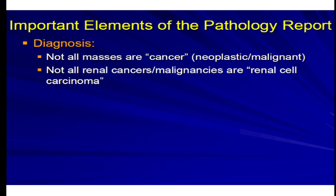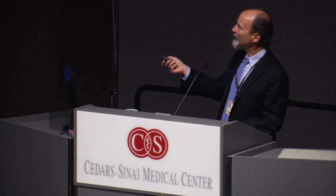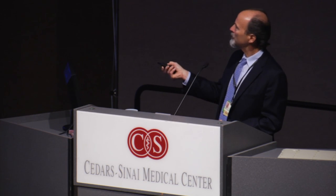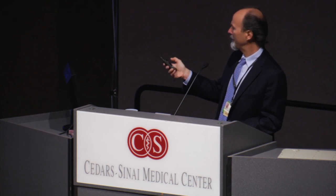The first aspect is diagnosis. The important thing to remember is that at the initial phase, tumors are resected and it's often not known whether it's a renal cell carcinoma. It's often not even known if it's a neoplasm at all — not all tumor masses are neoplastic or even malignant.